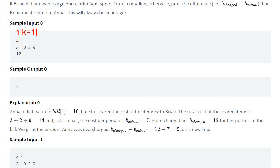We have a bill with item prices. Anna and Brian share the bill, but Anna did not eat the item at index k, so we need to calculate the price to pay.